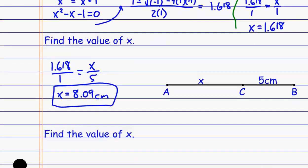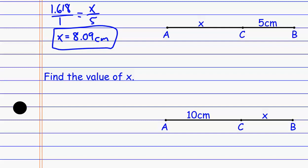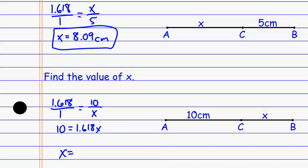We memorize the golden ratio and use it to set up our proportion. Same kind of thing here: I use the golden ratio, 1.618 compared to 1 — the long piece compared to the short piece. This time the long piece is 10 and the short piece is x. Cross multiplying gives 10 equals 1.618x. Dividing each side by 1.618 and punching it into the calculator, I get about 6.81 centimeters. So we're using the golden ratio to set up a proportion.